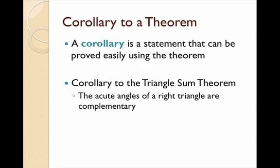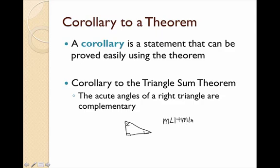Now we're going to move on to a corollary. A corollary is a statement that can be proved easily using a theorem — it's like a mini-theorem. We have a corollary to the Triangle Sum Theorem: the acute angles of a right triangle are complementary. In a right triangle, one angle is 90 degrees, so: measure of angle 1 plus measure of angle 2 plus 90 = 180. Moving 90 over, we get measure of angle 1 plus measure of angle 2 = 90, which is the definition of complementary angles. That proves the corollary to the Triangle Sum Theorem.